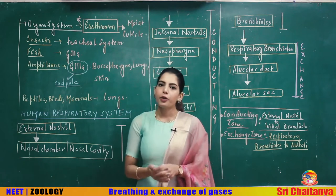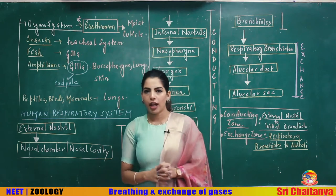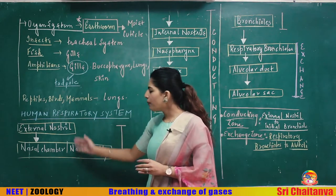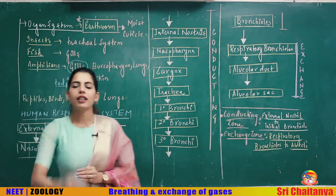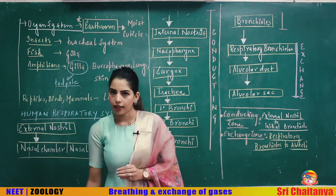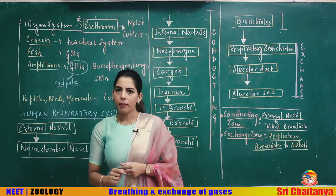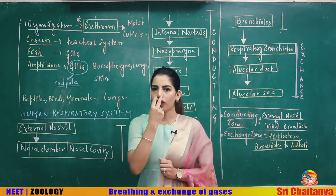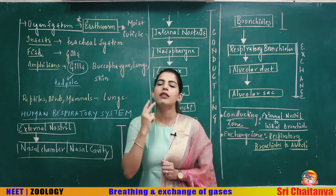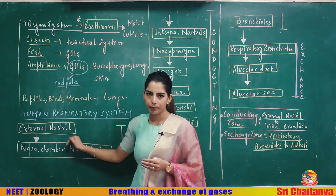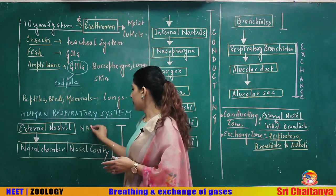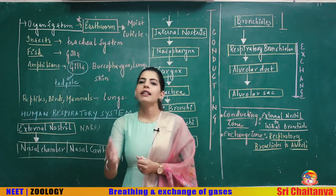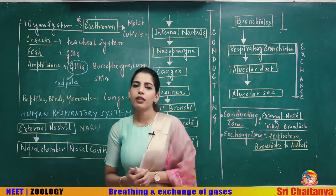Now the most important part — the human respiratory system. I've written all the parts in a flow chart. Starting from the first part: the two structures visible above the upper lip through which you inhale air are the external nostrils, also called external nares. These are one pair of openings present above the upper lip through which air enters and passes to the nasal chamber.